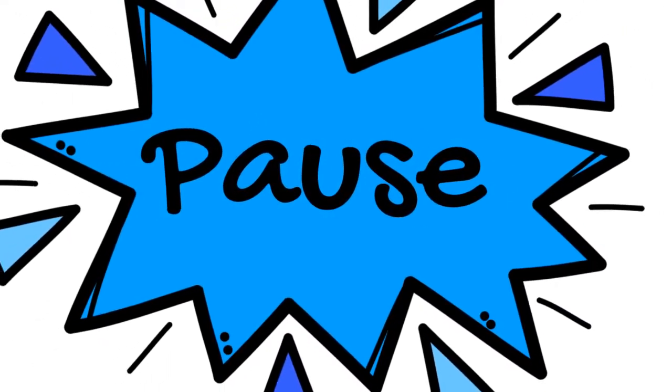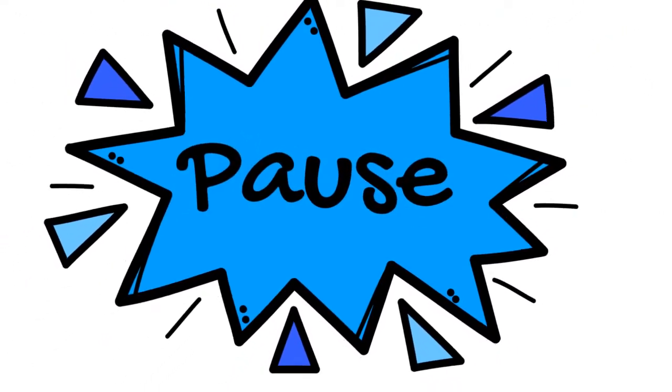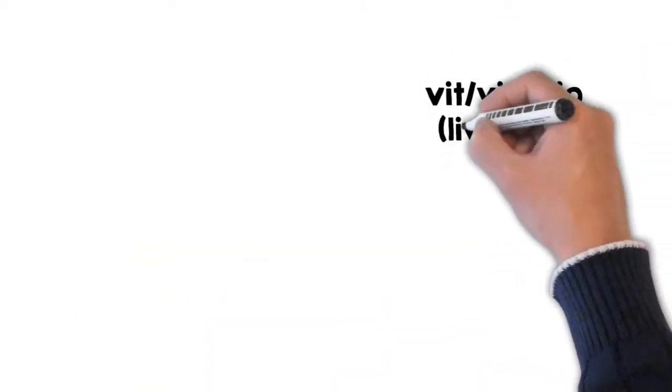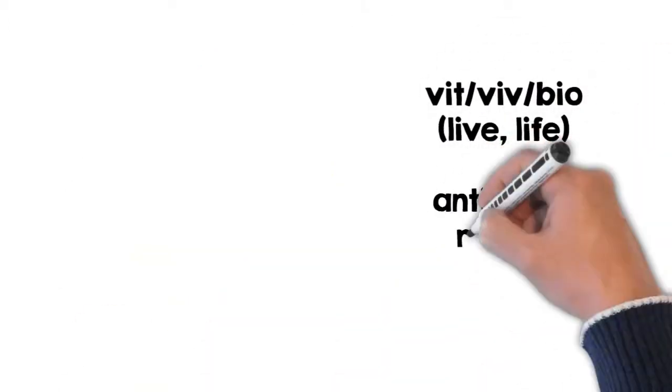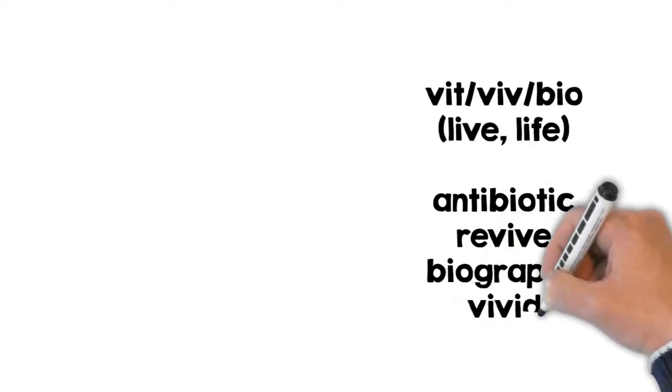When you finish, return here to check your answers. The root word vit, viv, and bio mean live and life. Some words containing this root include antibiotic, revive, biography, and vivid.